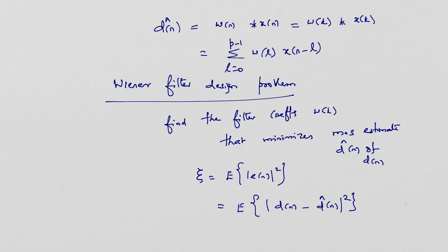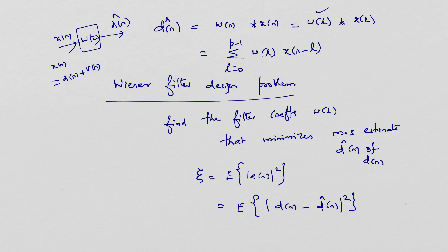Now let us see what the input is and what the expected output is from this Wiener filter. x(n) is the input to the Wiener filter whose system function is W(z), which is expected to estimate d-hat(n). Note that x(n) is actually the combination of d(n) and v(n). d-hat(n) is the minimum mean squared estimate of the desired output, which is the convolution of the impulse response of the filter and the input: the sum over l of w(l) multiplied by x(n minus l).